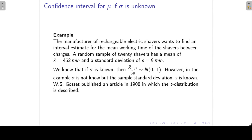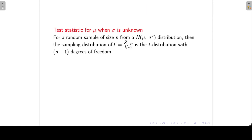W.S. Gossett, an English statistician, published an article in 1908 in which the t-distribution is described. We can use the t-distribution to set up a confidence interval for mu when sigma is unknown. For a random sample of size n from a normal distribution, the sampling distribution of the statistic t, which is x-bar minus mu divided by s over square root n, is the t-distribution with n minus 1 degrees of freedom.